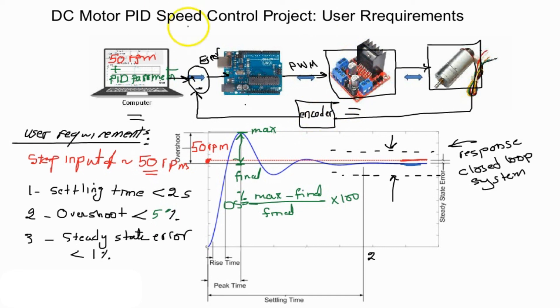It will be later shown that this summing junction in reality will be happening inside the Arduino, where the user input such as the desired rounds per minute or the PID parameters, this will be loaded automatically to the Arduino. And the encoder information which is normally pulses will be also fed to the Arduino.